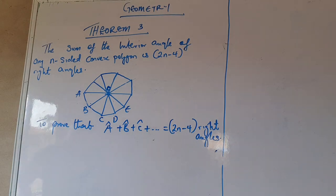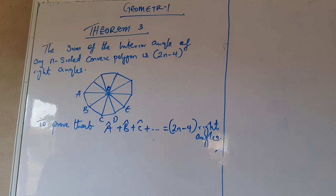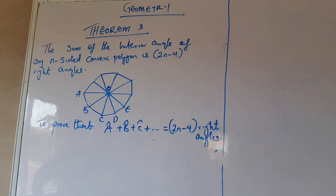You are once again welcome to Master T online tutorial class. We've worked on Theorem 1 and Theorem 2 as far as geometry is concerned. So today I would like us to look at Theorem 3. This theorem states that the sum of the interior angles of any n-sided convex polygon is 2n - 4 right angles.